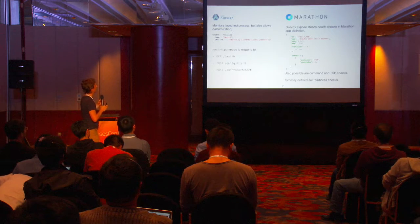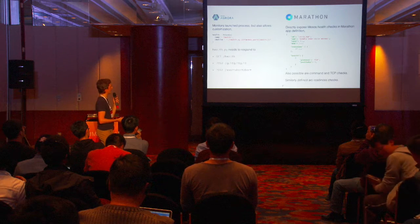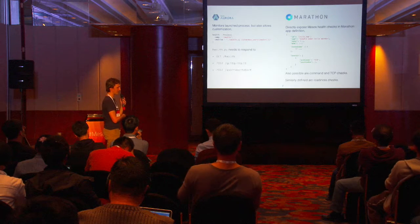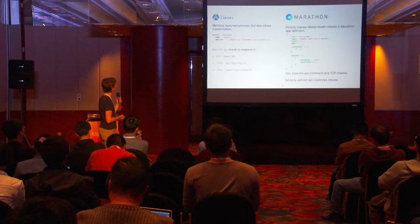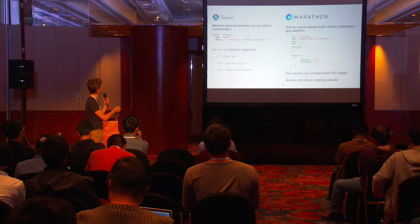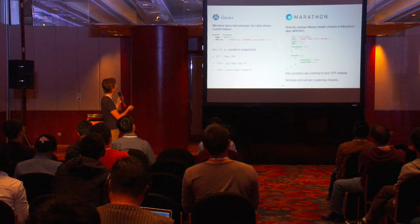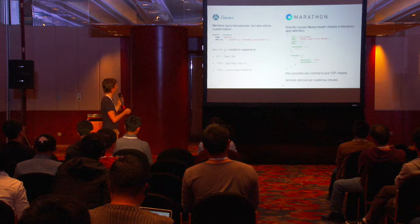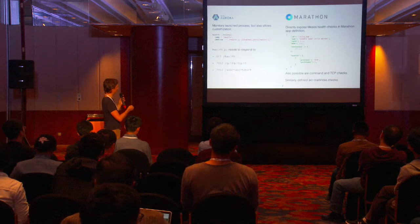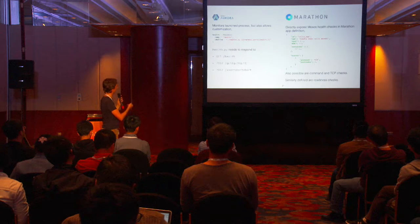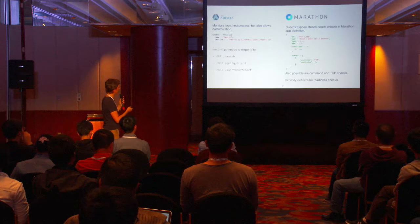Aurora and Marathon do this in different ways. Aurora launches a process and monitors its status in the system — it looks for the PID of that process to see if it's still there. We can also hook in a special health check process running in parallel with our task, defined in the DSL. That health check process needs to respond to a few different requests: it can say the task is still healthy, indicate it will be quitting soon to trigger cleanup, or abort. This is the protocol Aurora uses.